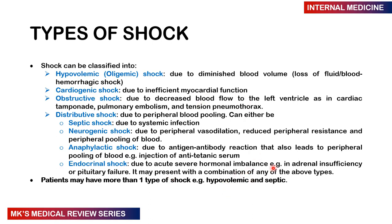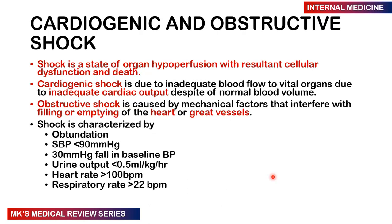A patient can actually present with more than one type of shock — for example, both hypovolemic and septic shock simultaneously. When we talk about cardiogenic shock, there is simply inadequate blood flow to the vital organs due to inadequate cardiac output despite a normal blood volume. Obstructive shock, on the other hand, is due to mechanical forces that impede or interfere with the filling or emptying of the heart or the great vessels.